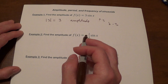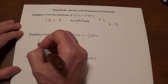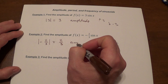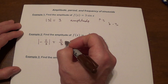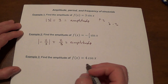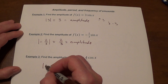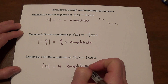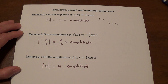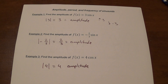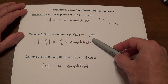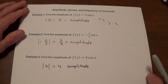Remember that a negative sign does not make any difference — we still take the absolute value, which gives us two-thirds for that function. And for the other function, the amplitude is the absolute value of 4, which is 4. So we have three functions with amplitudes of 3, two-thirds, and 4.